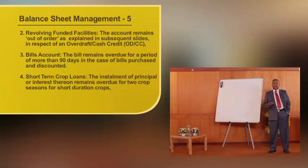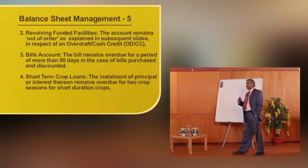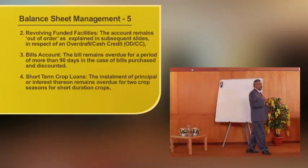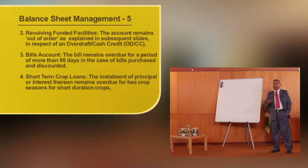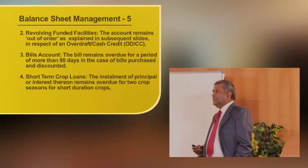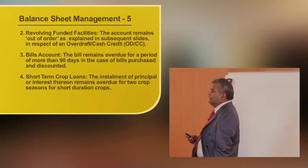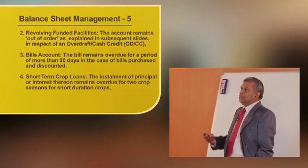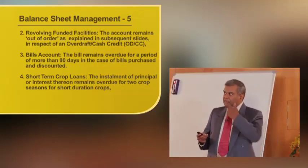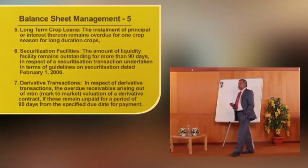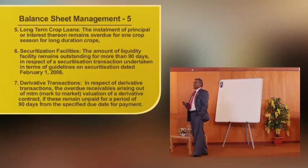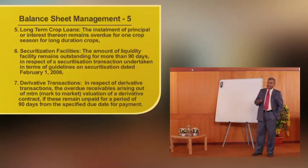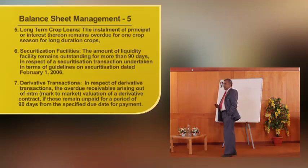Moving to agriculture facilities — the biggest credit facility is the crop loan, divided into short-term and long-term crop loans. Short-term crop loans are normally repaid within a year whereas long-term crop loans are repaid beyond a year. For short-term crop loans, the installment of principal or interest remains overdue for two crop seasons. For long-term crop loans, it remains overdue for one crop season.